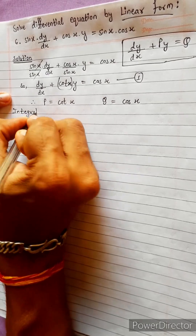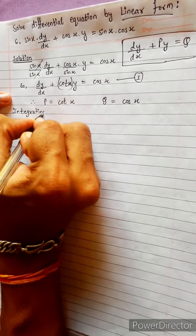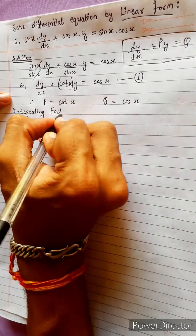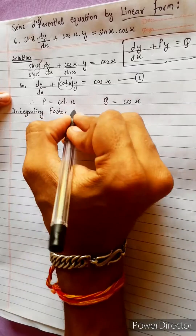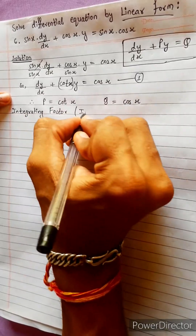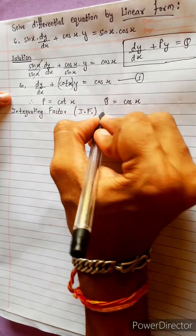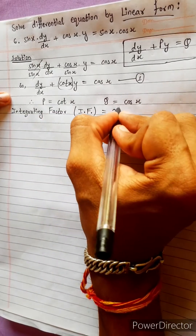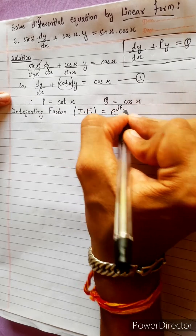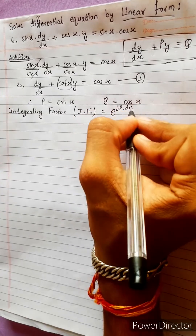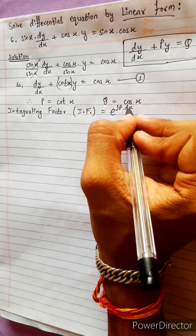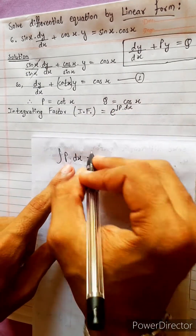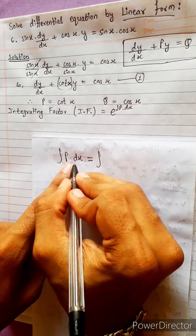Integrating factor formula: exponential integration of p dx. This is the formula — e to the power of ∫p dx. Let's say p dx. This is p dx. Integrating factor p. This is cot.